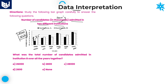Look at the first question: what was the total number of candidates admitted in Institute B over all the years together? We need to calculate Institute B's values over all the years, starting with 2002. I will write down all the values for Institute B from the bar graph.